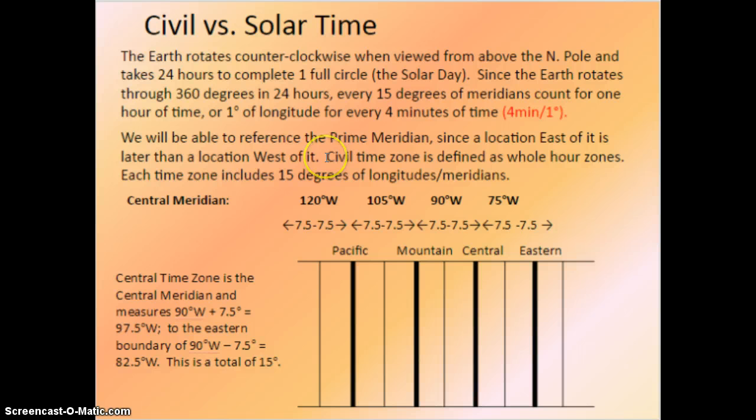We will be able to reference the prime meridian since a location east of it is later than a location west of it. For civil time zones, it is defined by whole hour zones, and these are the zones that we live in. We live in the central time zone. Each time zone includes 15 degrees of longitude, or meridians.